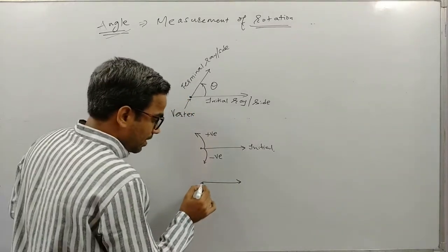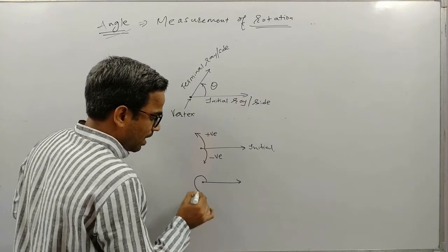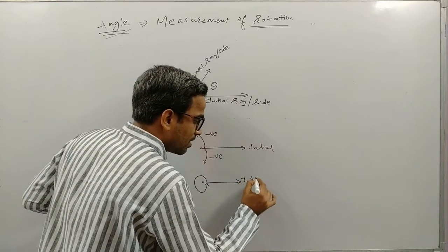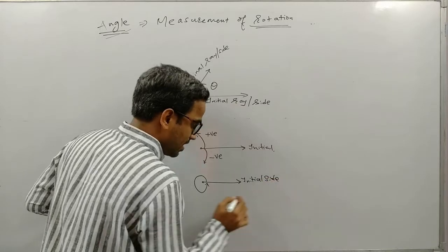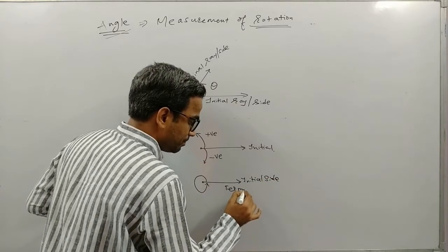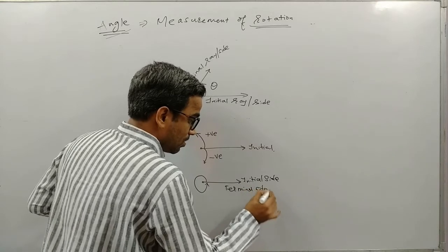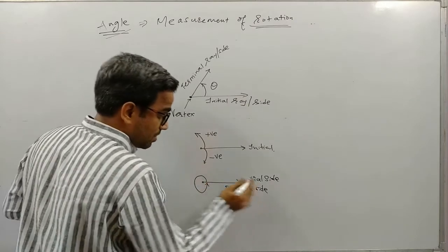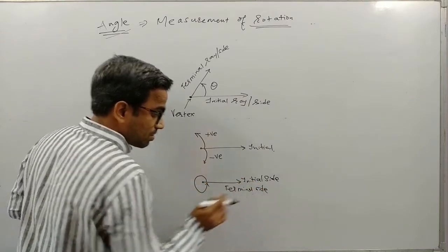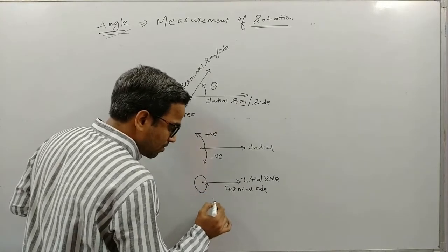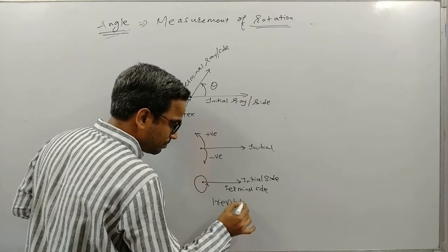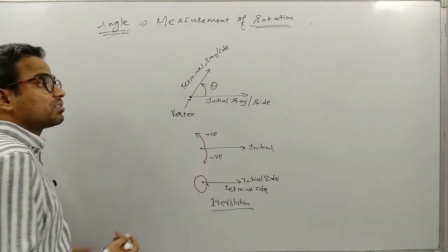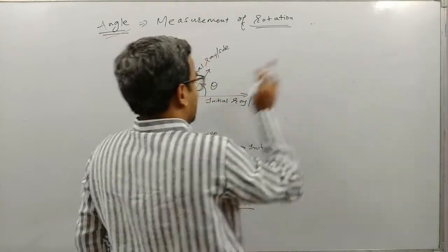Now suppose we take this as our initial ray and rotate it. When we come back to the same point, the initial side is the same as the terminal side. That rotation — when the initial side rotates and comes back to coincide with the terminal side — we call that one revolution.